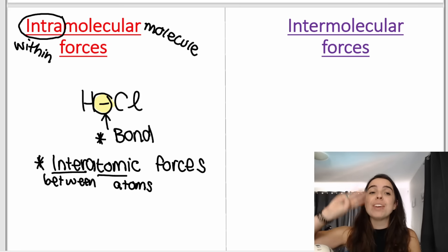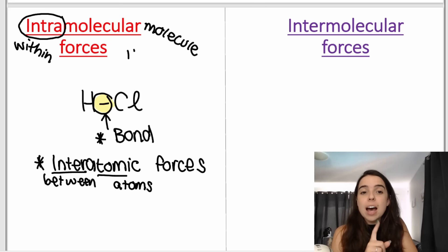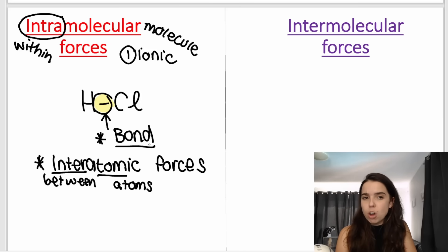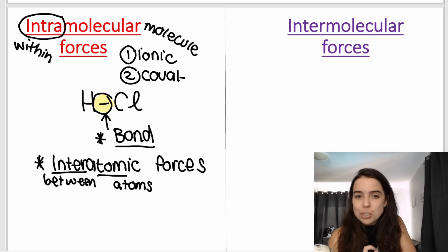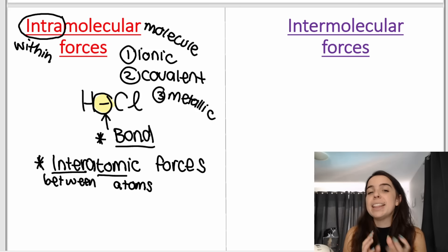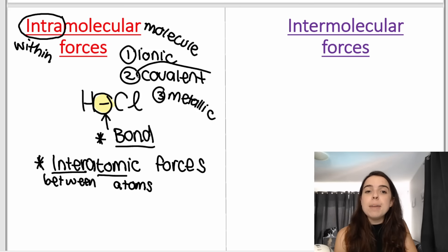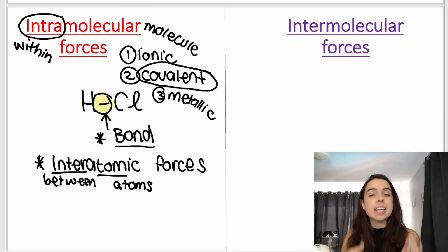We get three types of intramolecular forces that you need to know. Number one is ionic bonding. Remember, bonds are intramolecular forces. We get covalent, which is the one we're focusing on mostly in this chapter. And we also get metallic, which is something we dealt with in grade 10. Covalent is the main one we're looking at this year.